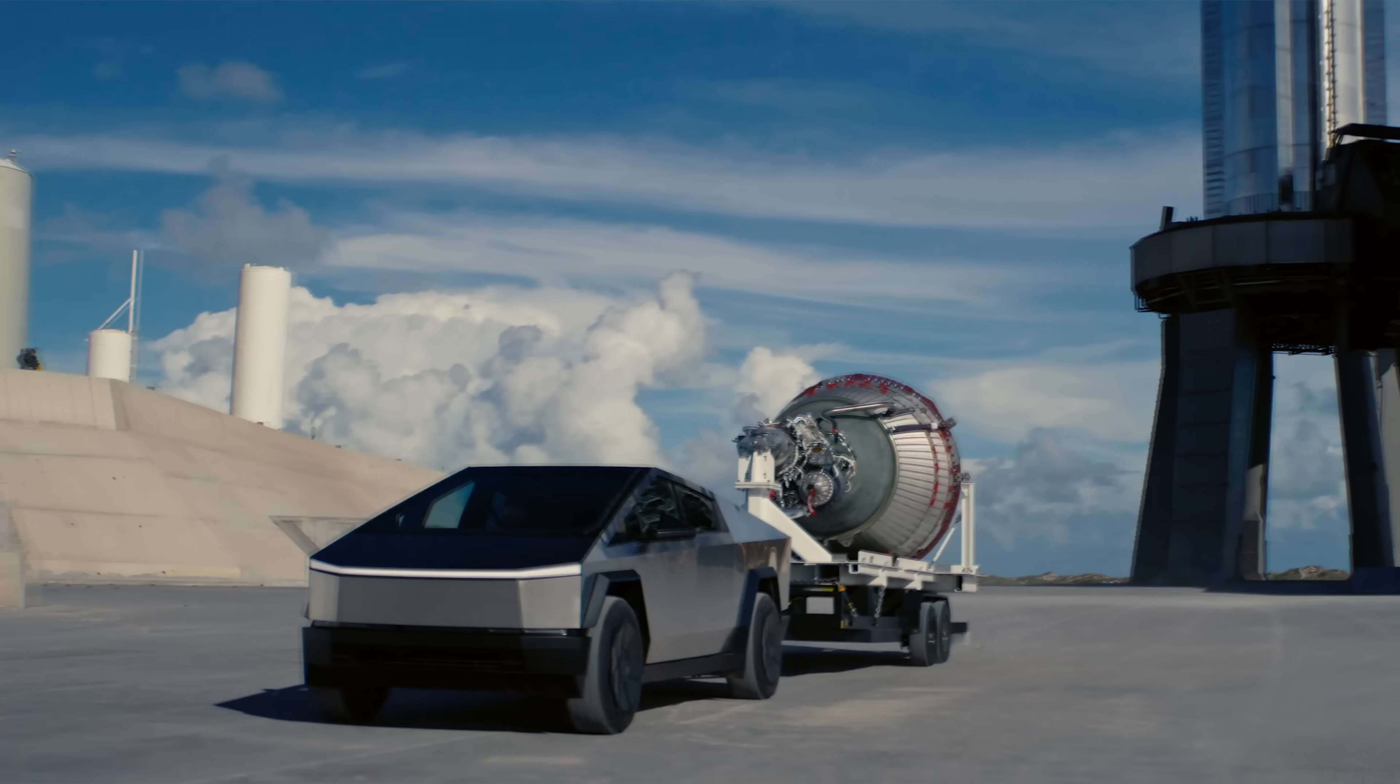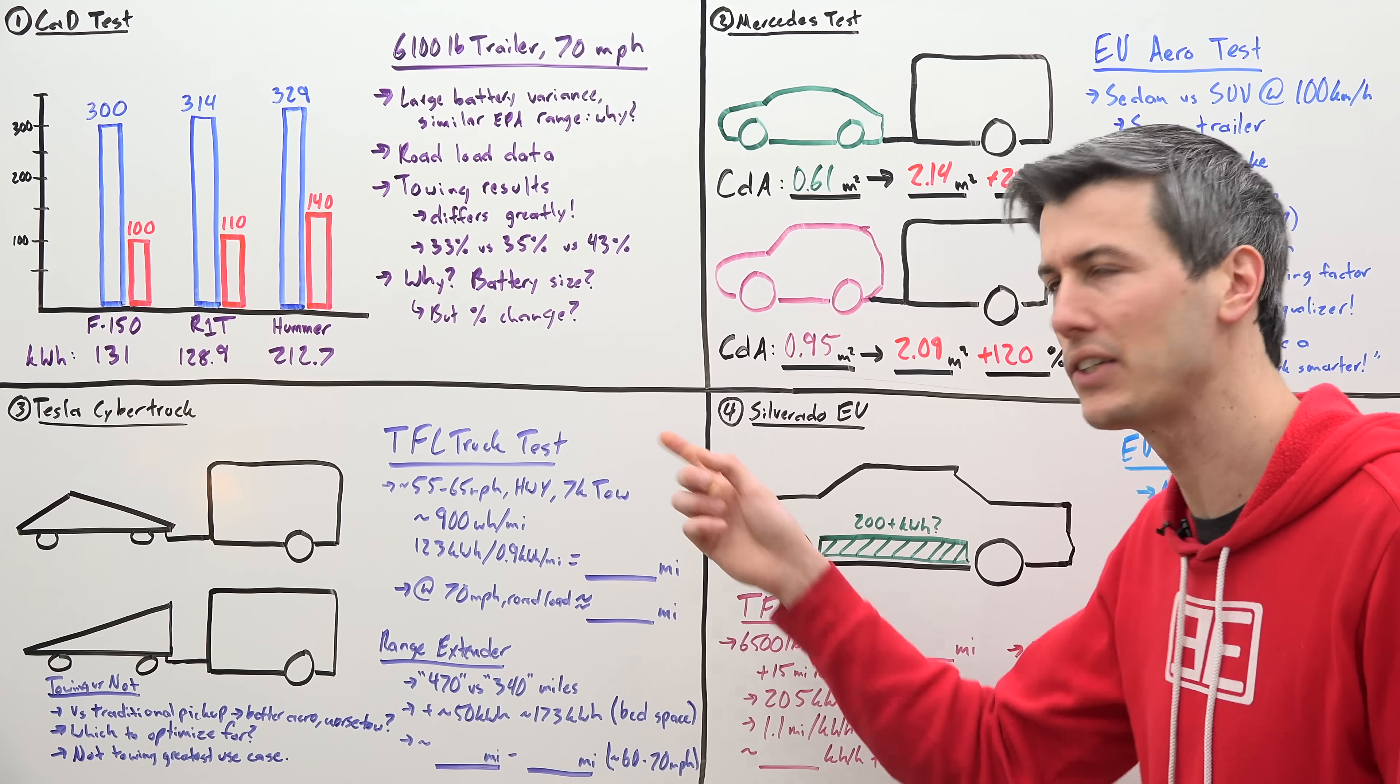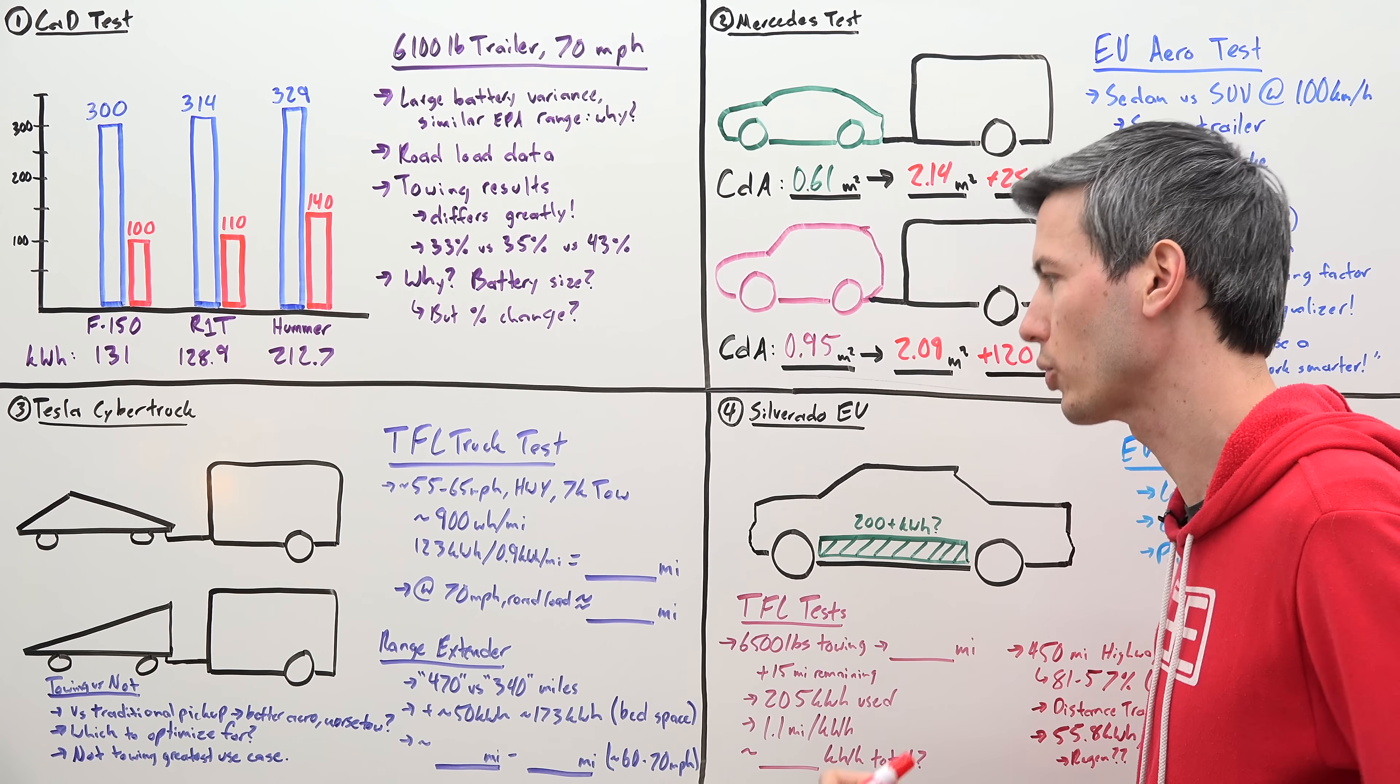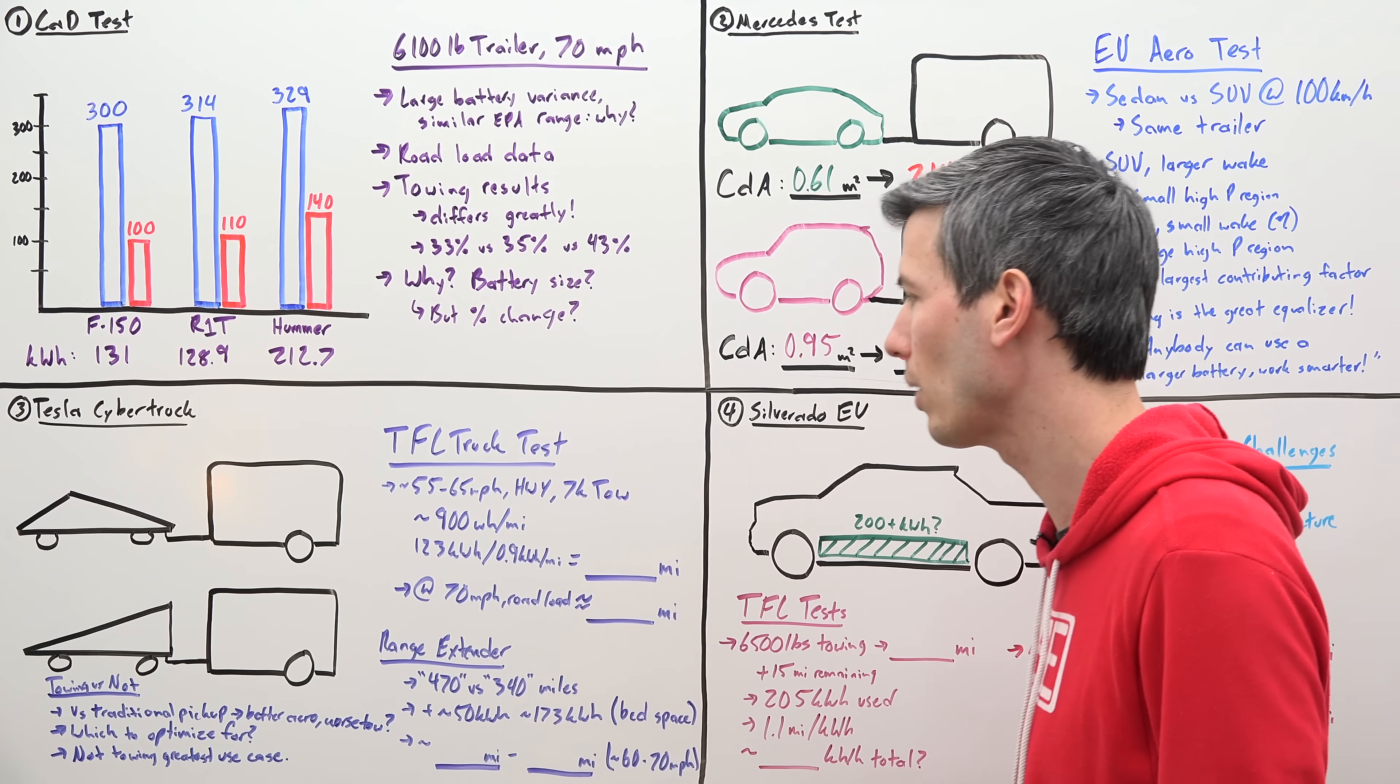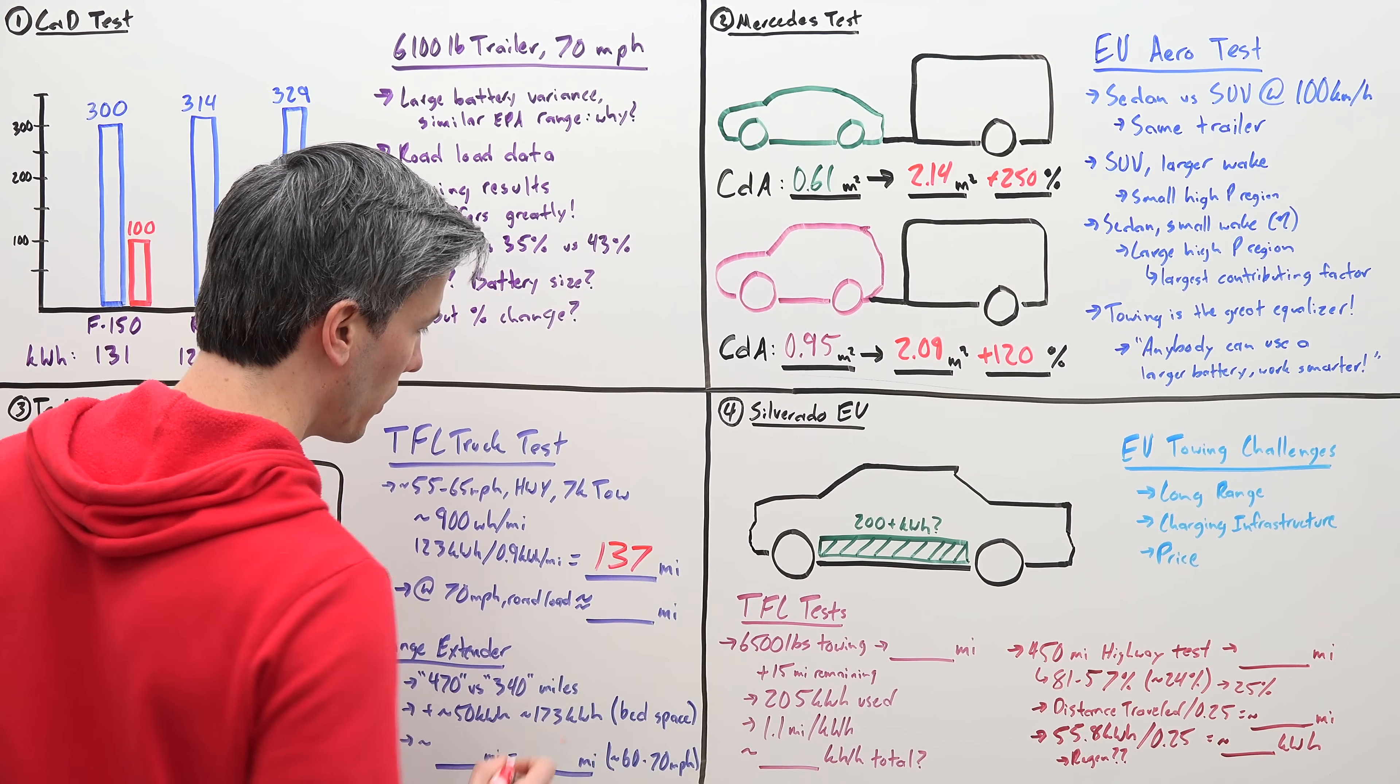So what is the Cybertruck's towing range? Well, I was trying to find a test that was similar to what Car and Driver did, and I found one by TFL Truck where they were looking at the Cybertruck on the highway at about 60 miles per hour with a 7,000 pound trailer. Now they were getting an efficiency of about 900 watt hours per mile, and if you have a 123 kilowatt hour battery, divide that by 0.9, that gives you a total towing range of 137 miles.